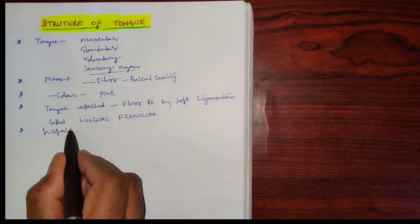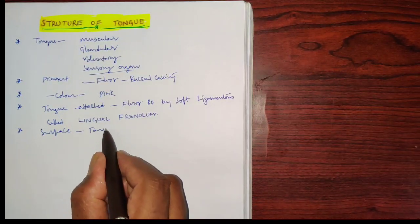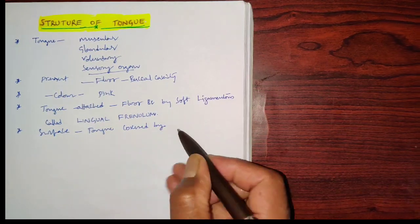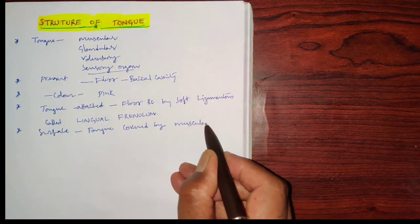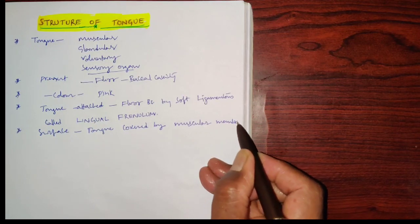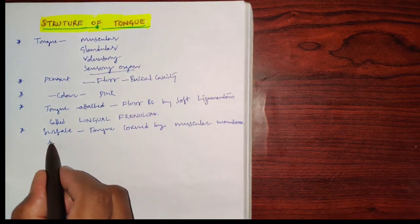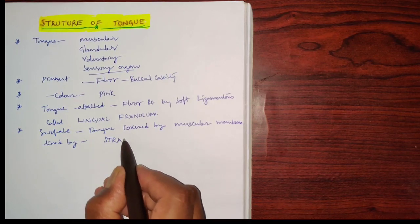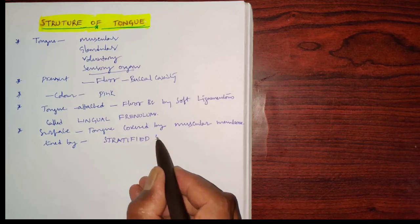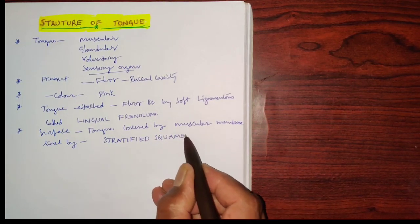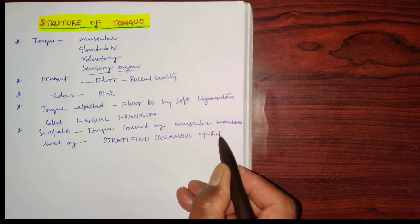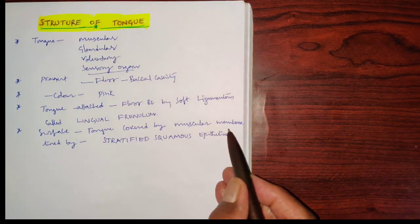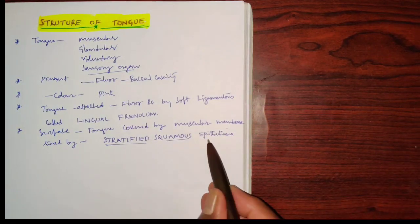The surface of the tongue is covered by a muscular membrane lined by stratified squamous epithelium.